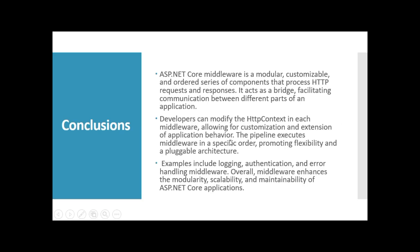Let's conclude our middleware topic. ASP.NET Core middleware is a modular, customizable, and ordered series of components that process HTTP requests and responses. It acts as a bridge facilitating communication between different parts of an application. Developers can modify the HTTP context in each middleware, allowing for customization and extension of application behavior. The pipeline executes middleware in a specific order, promoting flexibility and a pluggable architecture. Examples include logging, authentication, and error handling middlewares.